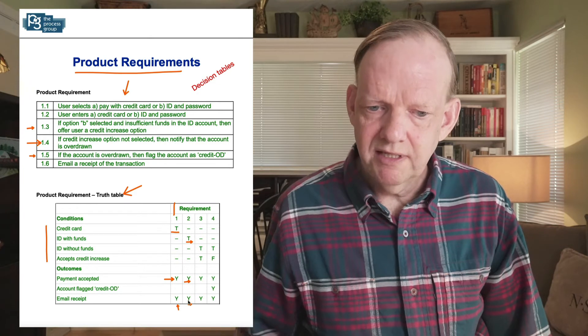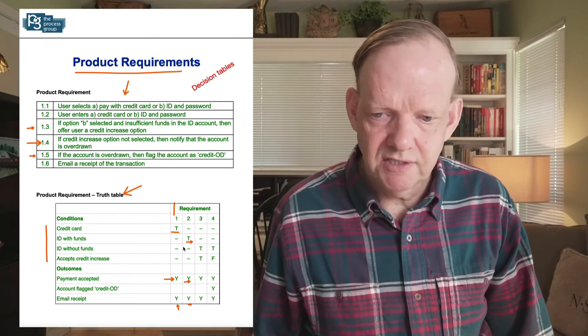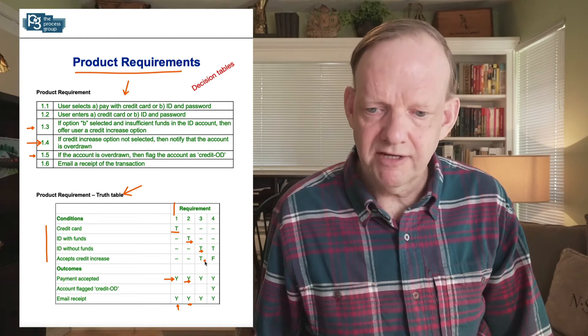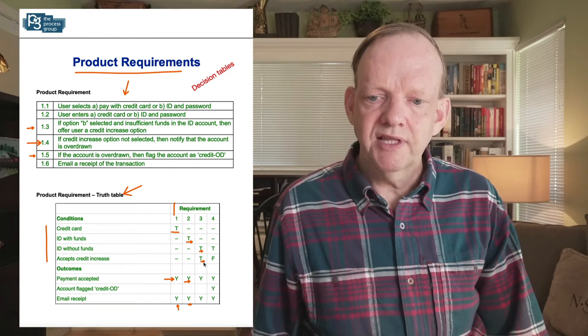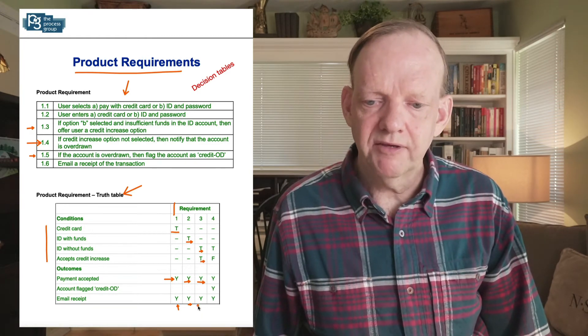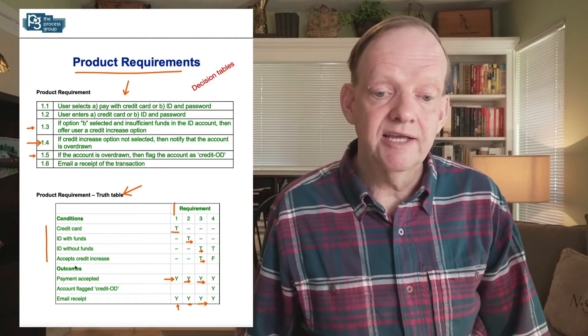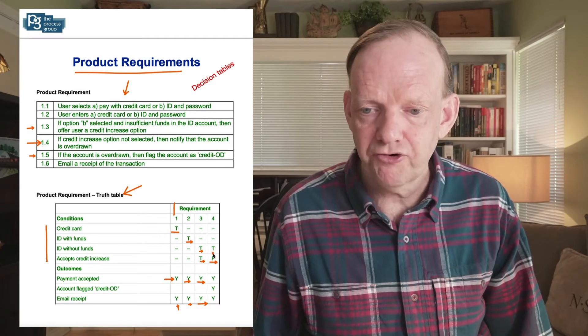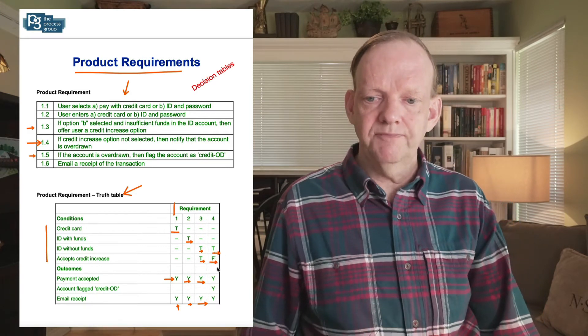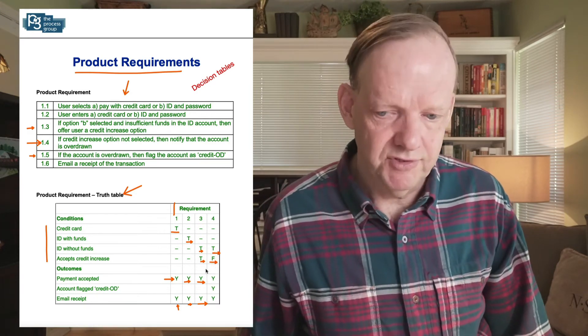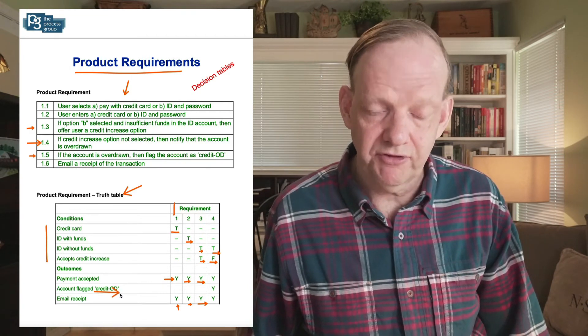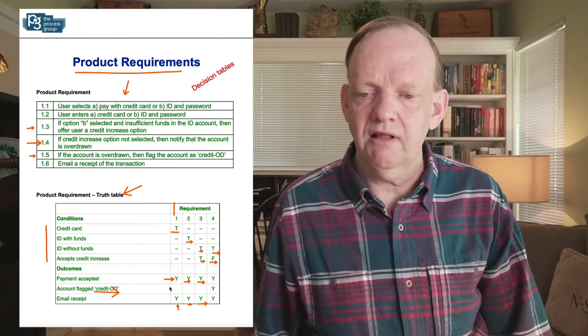Then it gets a bit more sticky. We have ID without funds, so we have a truth down here. And then they accept a credit increase, true. And so therefore we accept the payment and we give them the receipt. And then if they don't accept their credit increase, now we have a false over here and a true for without funds, then we have to figure out what happens. Now we can see that the only time we do the credit increase is this last condition.